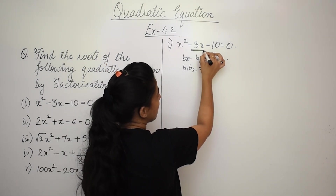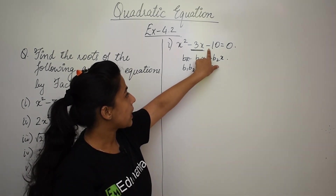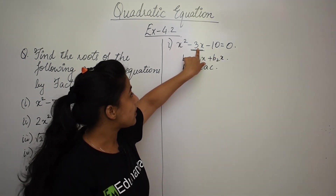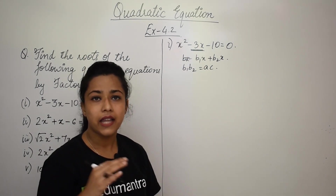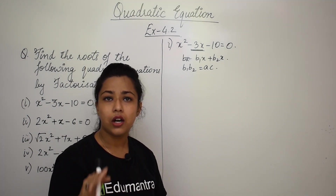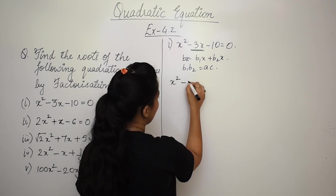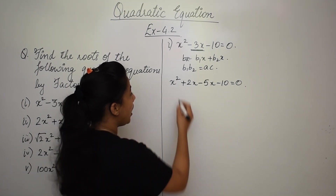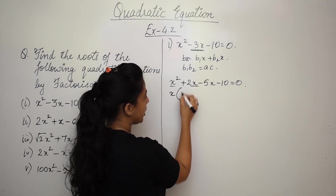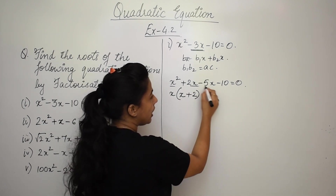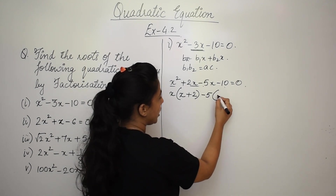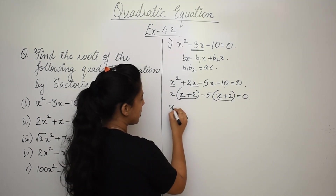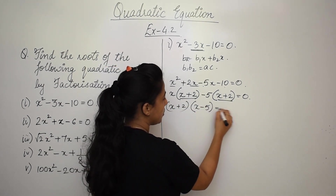We need two numbers that add to -3 and multiply to -10. Since the product is -10, one number is minus. We need -3, so the bigger number is minus. The factors are -5x and +2x. So it becomes x² + 2x - 5x - 10 = 0. Taking x common from the first two terms gives x(x + 2), and -5 common from the last two gives -5(x + 2).